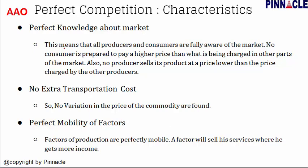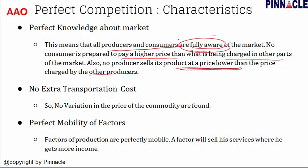Perfect knowledge about the market means that all producers and consumers are fully aware of the market. No consumer is prepared to pay a higher price than what is being charged elsewhere in the market, and no producer sells its product at a price lower than the price charged by other producers. As a result, there is only one single price in this market, and no variation in the price of commodities is found.